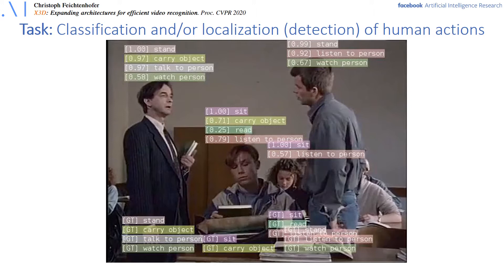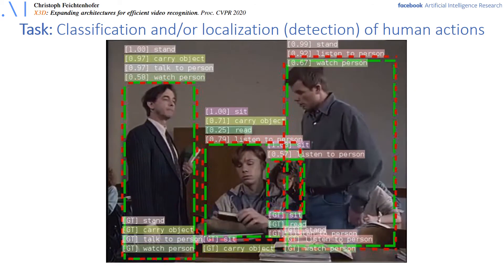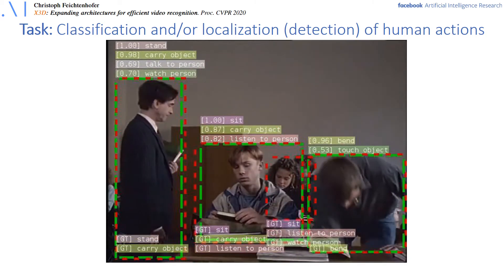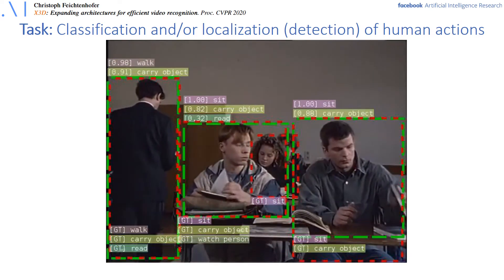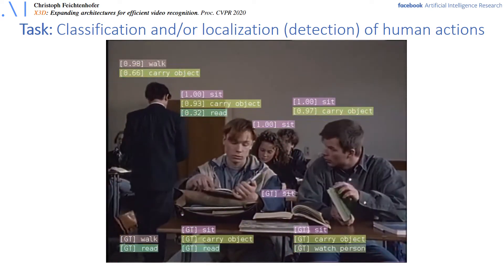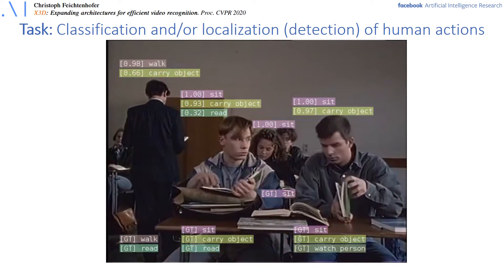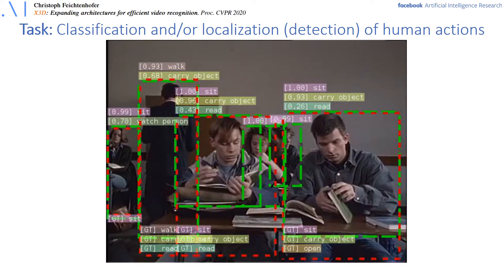For example, predicting if the person on the left is talking or the person on the right would sit down, only a method that uses 3D spatiotemporal information could solve that problem. This makes this task particularly interesting and challenging. On the top of the people you can see the predictions of the model that will be described in this talk.